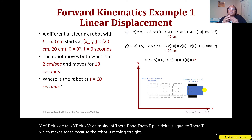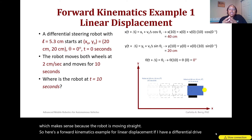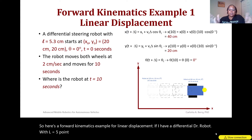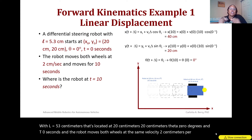Here's a forward kinematics example for linear displacement. A differential drive robot with L = 5.3 cm is located at position (20 cm, 20 cm) with θ = 0° at t = 0 seconds. The robot moves both wheels at the same velocity of 2 cm/s and moves forward for 10 seconds. Where is the robot after 10 seconds?